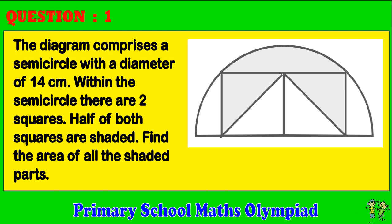Question 1. The diagram comprises a semi-circle with a diameter of 14 cm. Within the semi-circle there are two squares. Half of both squares are shaded. Find the area of all the shaded parts.